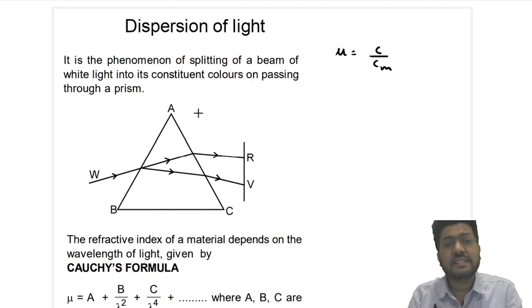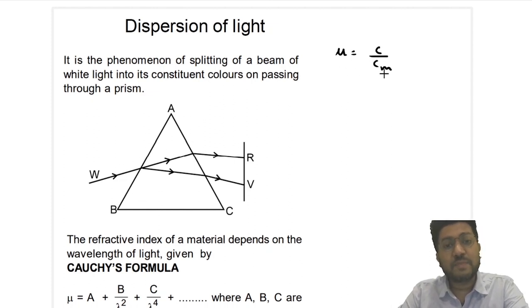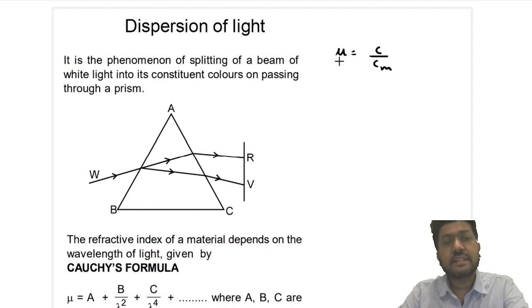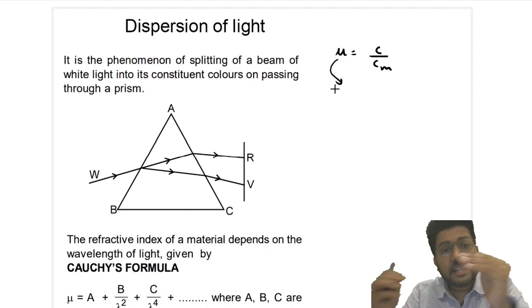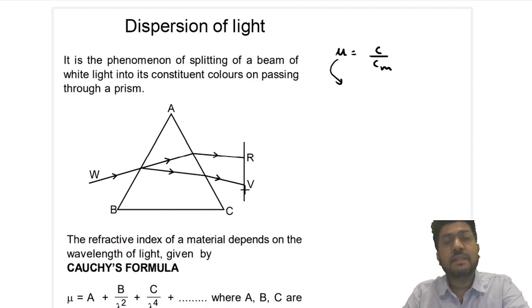So if the refractive index is different, then the bending is different. The red light has maximum speed. That means it has minimum refractive index. If it has minimum refractive index, that means it has least bending capacity. Low refractive index means lower bending capacity. So that means the red light will bend the least and the violet light will bend the maximum, because violet light has maximum refractive index.